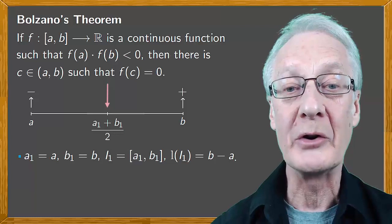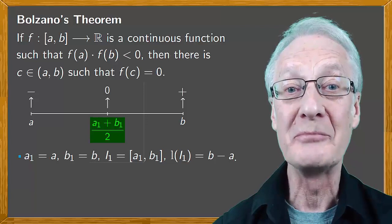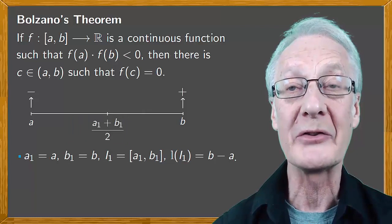Think about the image at the midpoint. If it's zero then we already have a value inside the interval where the image is zero. We know the value of c there and we're done. Otherwise the image of the midpoint could be positive or negative.